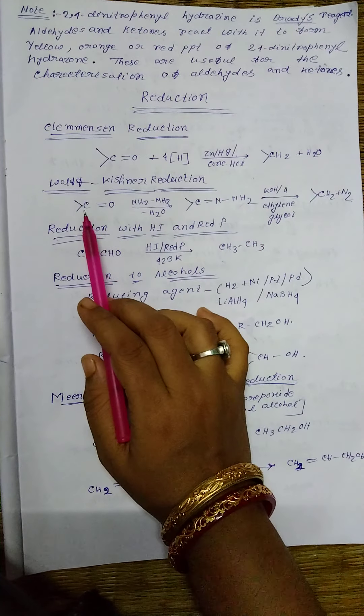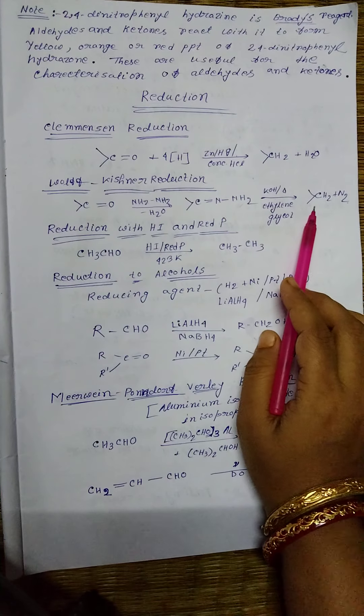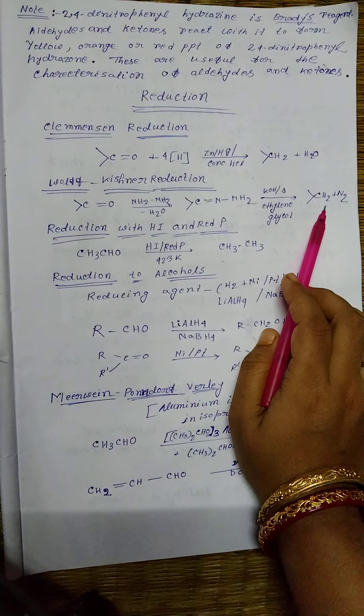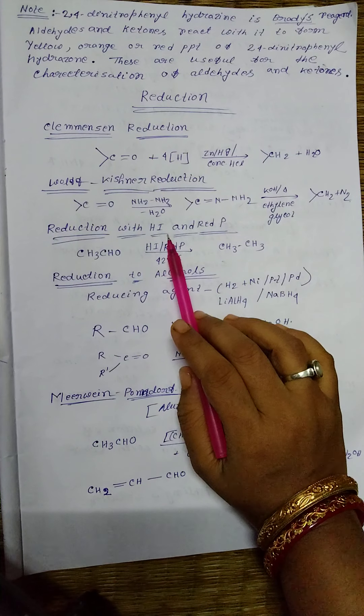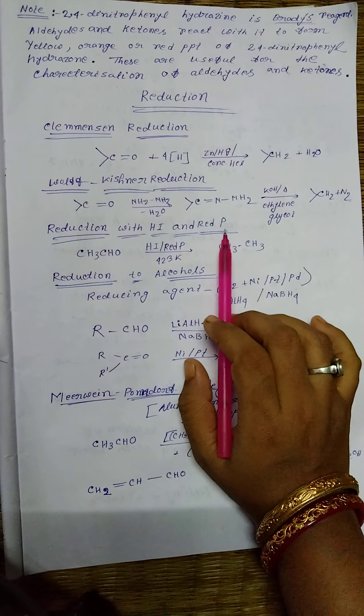This reduction also reduces the C=O to CH2. Next, reduction with HI and red phosphorus. In this reduction reaction we also get hydrocarbons. The C=O group is reduced to CH2.